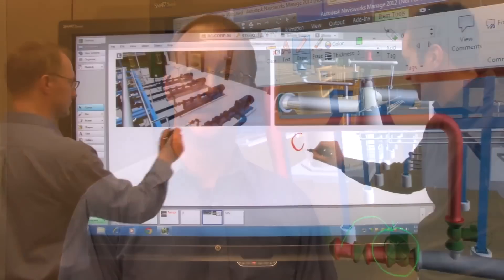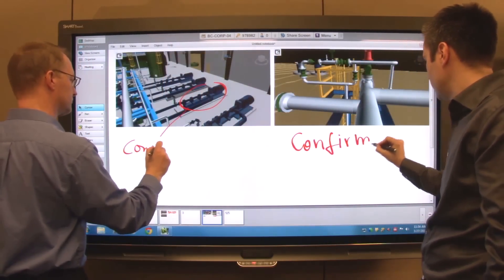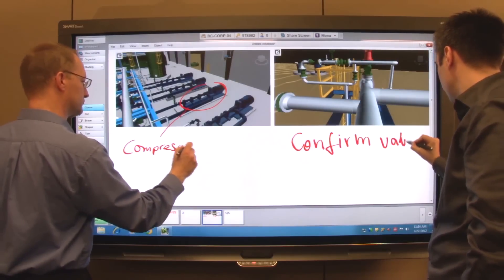With Smart Bridget conferencing each individual can engage fully in the design review. They can collaborate whether they're in the same meeting room with you, out at the job site, or in an office halfway around the world.